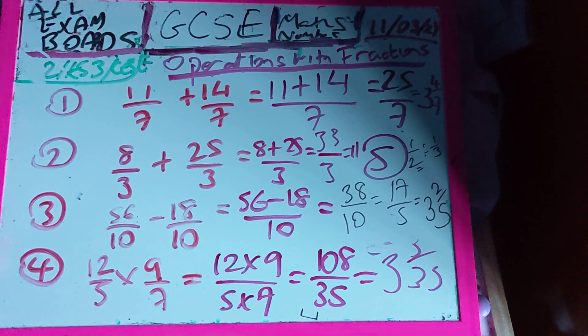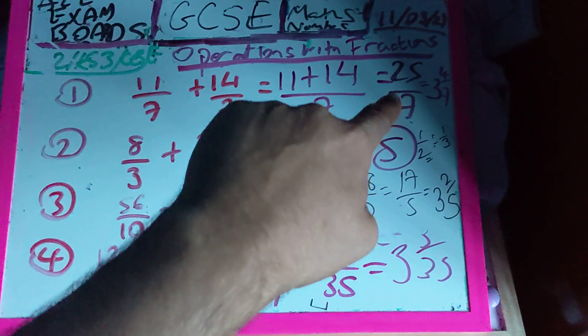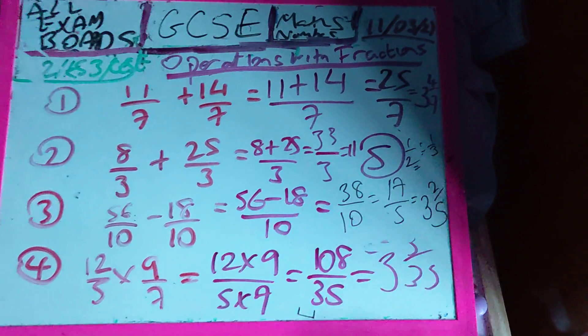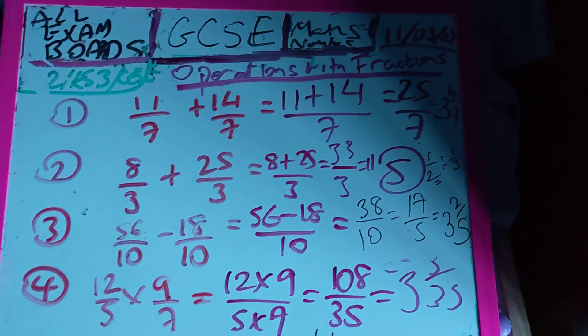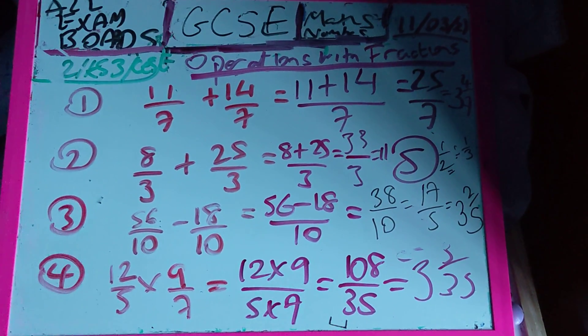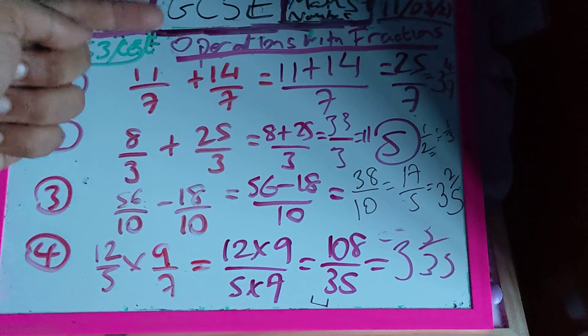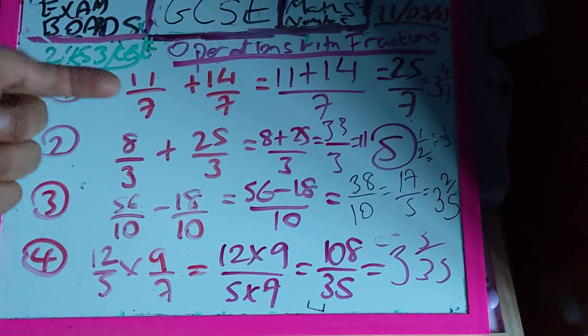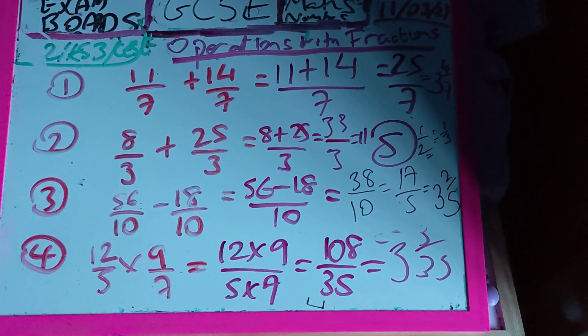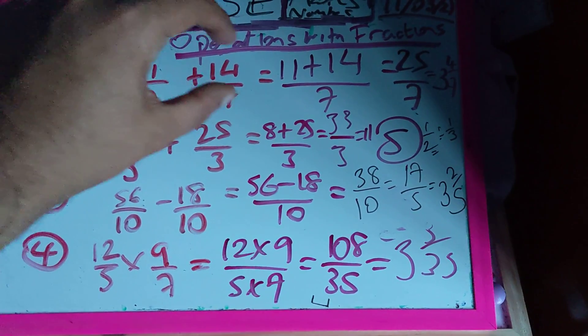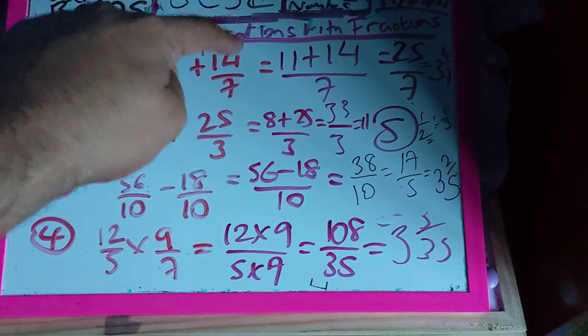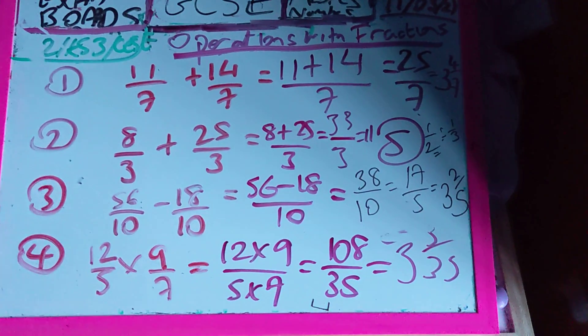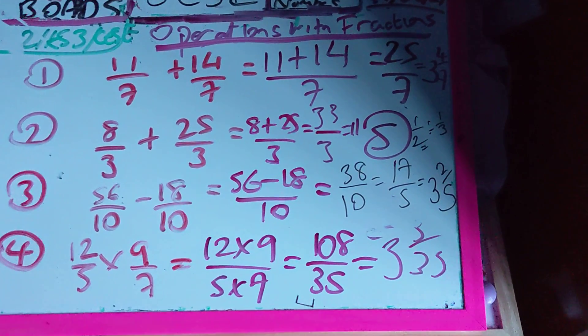Which is equal to 3 and 4 7ths, because that is called an improper fraction or a top heavy, and that's called a mixed number. So, a top heavy fraction or an improper fraction can always be written as a mixed number. When the numerator is bigger than the denominator, that is called an improper fraction. They are both improper fractions, so my answer is also going to be an improper fraction or a whole number.